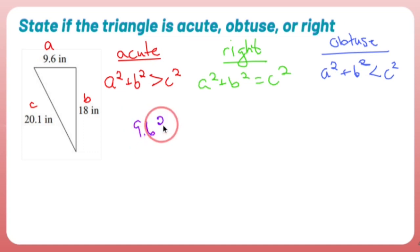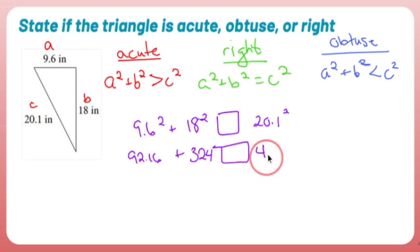9.6 squared plus 18 squared compared to 20.1 squared. Once I find out, I'm in great shape. 9.6 squared is 92.16. 18 squared is 324.